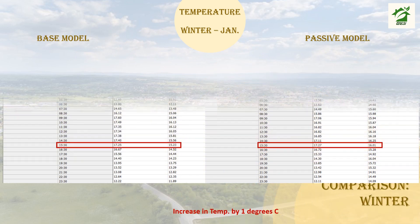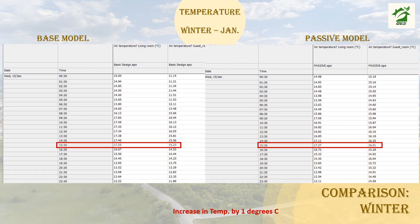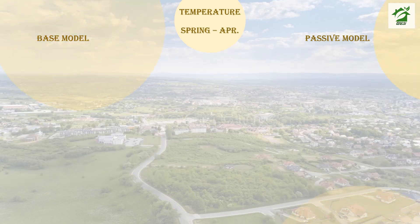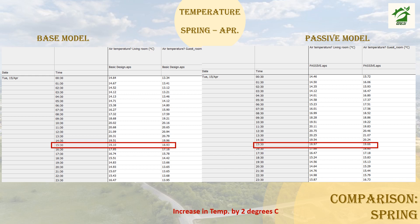Three dates were chosen to compare temperature: 15th of January, 15th of July, and 15th of April. The passive model achieved almost one degree higher than the PACE model on 15th of January due to the south-facing orientation and material enhancements. Similarly in spring, the passive model has a higher temperature than the PACE model for the same reasons.